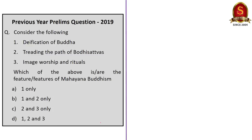Now we will discuss a previous year prelims question asked in 2019. This question is a history-based question — more specifically, a culture-based question. When it comes to UPSC, the Buddhism and Jainism area is very important, so concentrate more on that. You can expect at least one question from this area. If you know what Mahayana Buddhism is and its characteristics, it is a very easy question, because the statements given describe the attributes of Mahayana Buddhism.